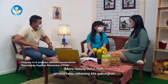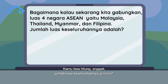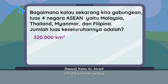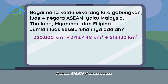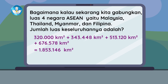Gimana kalau sekarang kita gabungkan luas 4 negara ASEAN, yaitu Malaysia, Thailand, Myanmar, dan Filipina? Kamu bisa hitung jumlah luas keseluruhannya? Berarti 320.000 km persegi ditambah 343.448 km persegi ditambah 513.120 km persegi ditambah 676.578 km persegi. Hasilnya adalah 1.853.146 km persegi.